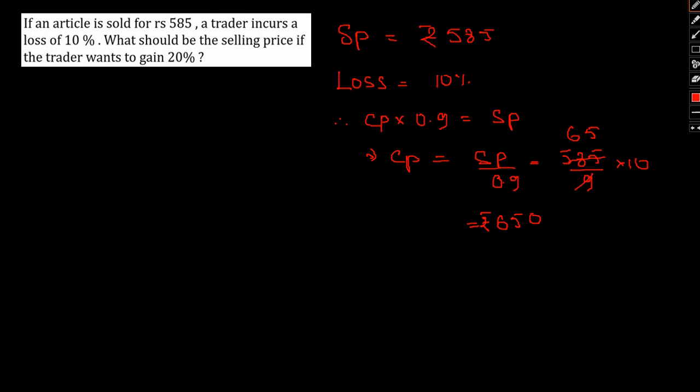Now we want profit of 20%, so therefore the new selling price will be 1.2 times the CP, that is 1.2 into 650. 650 plus 130, that is 780 rupees. This should be our answer.